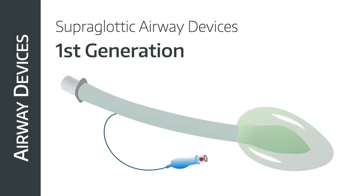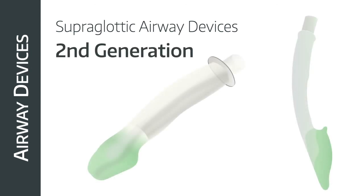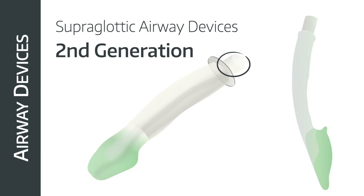Second generation supraglottic devices have features inbuilt to reduce the risk of aspiration in the event of regurgitation. First, the i-gel: the laryngeal mask here is not an inflatable cuff but a thermoplastic elastomer that molds to the patient's airway, generating a seal generally up to 26–30 cmH₂O — slightly higher than the classical LMA. It has an integral bite block, a narrow bore esophageal drain tube that provides an early indicator of regurgitation and protection from aspiration, and a wide bore short airway tube reducing resistance. You can also pass a scope or airway exchange device down it. The i-gel is sized according to patient weight, with the weight bracket printed on each device.